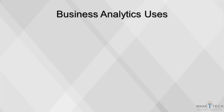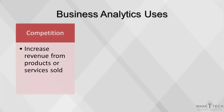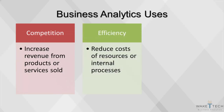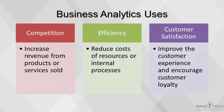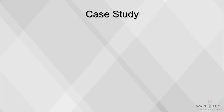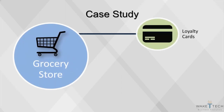Businesses use analytics to gain an edge on their competitors and increase profits. The three main areas are: competition, to increase revenue from products or services sold; efficiency, to reduce the cost of resources or internal processes; and customer satisfaction, to improve the customer experience and encourage customer loyalty. For example, loyalty cards are used by grocery stores to uniquely identify their customers. By requiring a loyalty card to obtain special discounts, the grocer can isolate habits of each customer and provide customized promotions to increase spending.